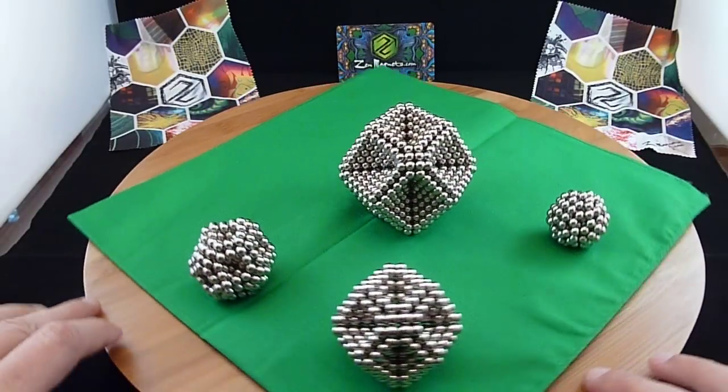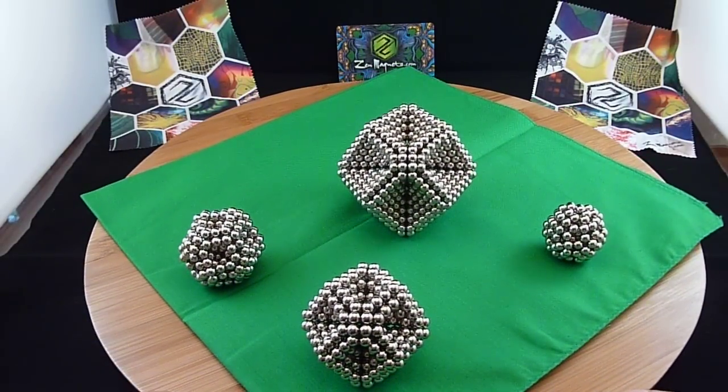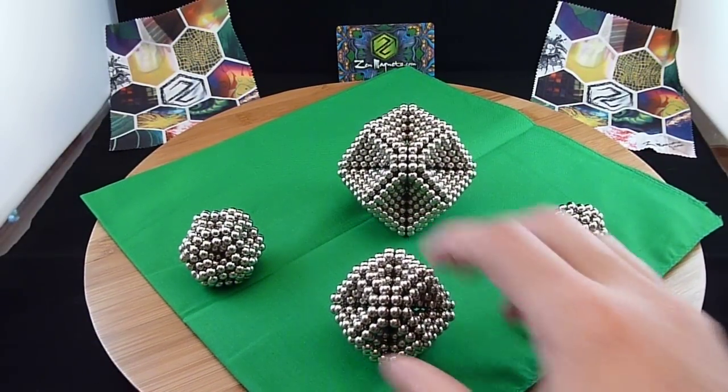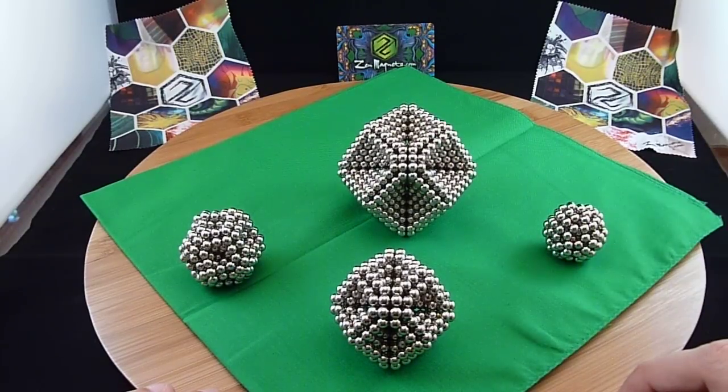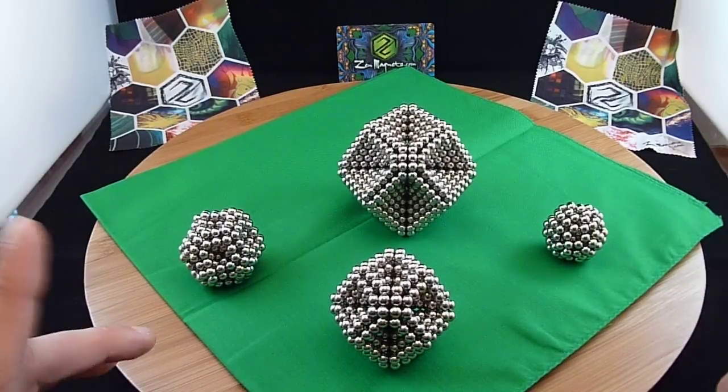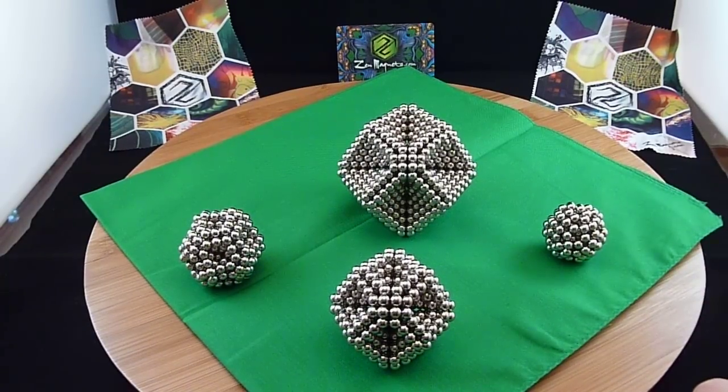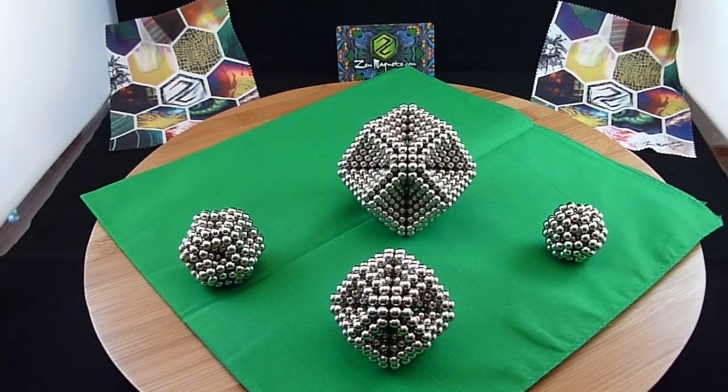And you can make those with pretty much any size hexagon you want. Again, this big one has a thousand eight balls, a six wrap hexagon. So give that a try. And I hope you enjoy this. These are all made with Zen magnets. You can see my card and stuff in the back. So give them a try. Have a lot of fun.